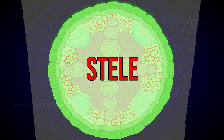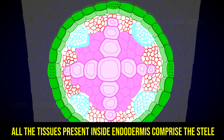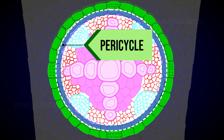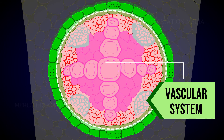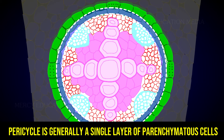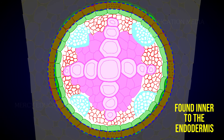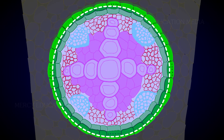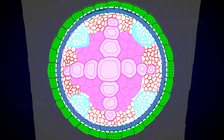All the tissues present inside the endodermis comprise the stele. It includes the pericycle and vascular system. Pericycle is generally a single layer of parenchymatous cells found inner to the endodermis, and it is the outermost layer of the stele. Lateral roots originate from the pericycle; thus, the lateral roots are endogenous in origin.